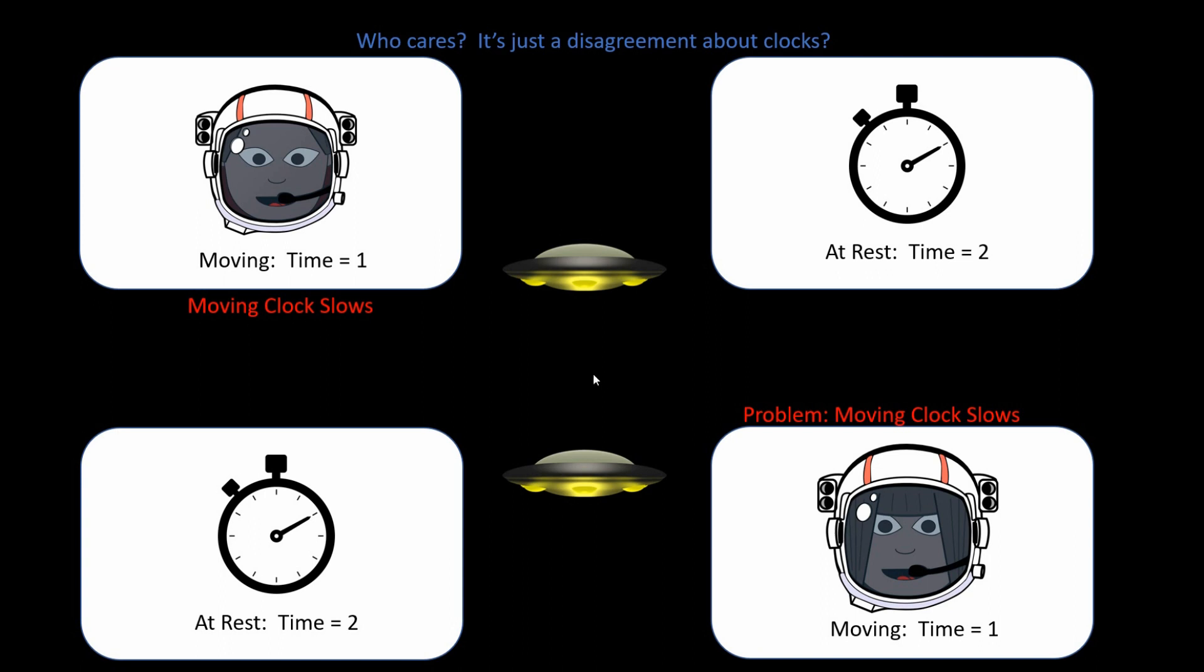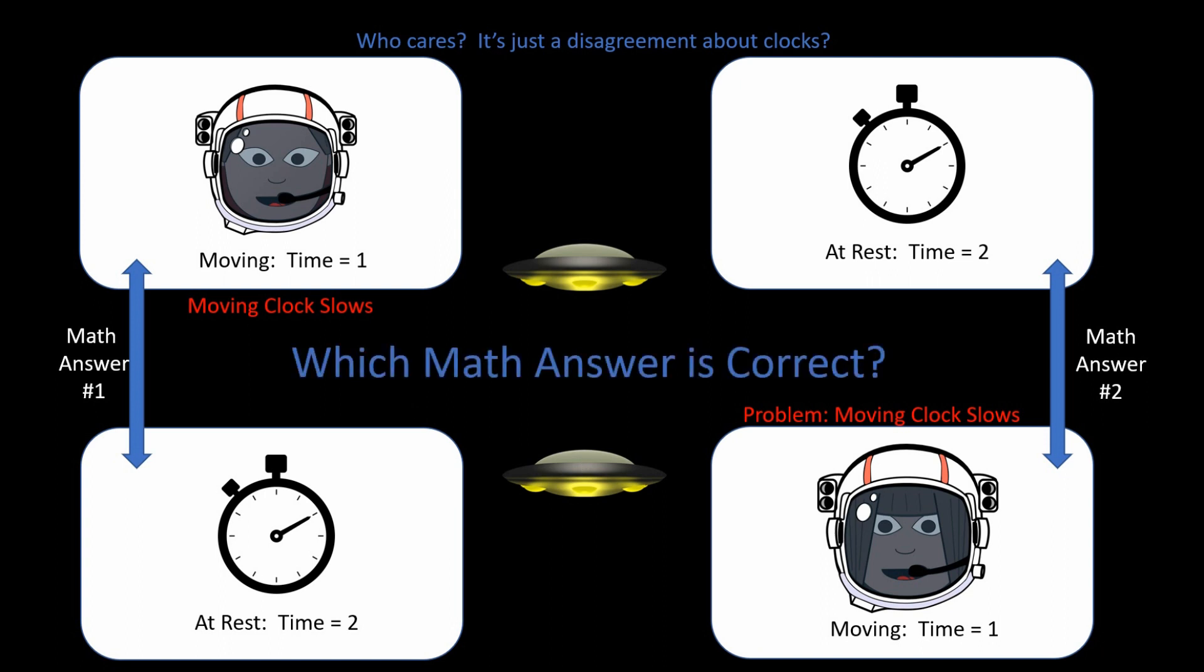So the next logical step would be to say, hey, we have a valid math answer from the relativity equations right here and right here. So two valid math answers, they both can't be right. So which math answer is the correct one? Again, the first postulate of Einstein's relativity is the principle of relativity, and it is giving us all of this information.